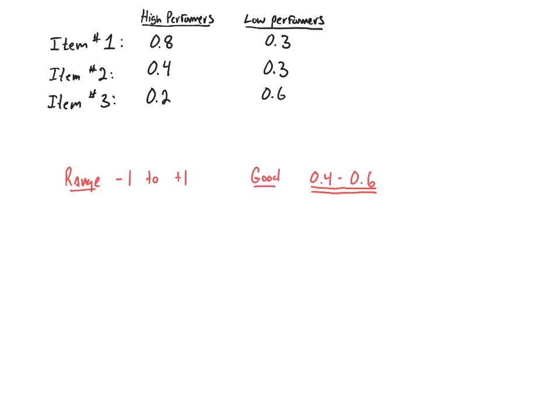Now, the higher we get, the closer we get to 1, the more discriminating that question is between high and low-performers.